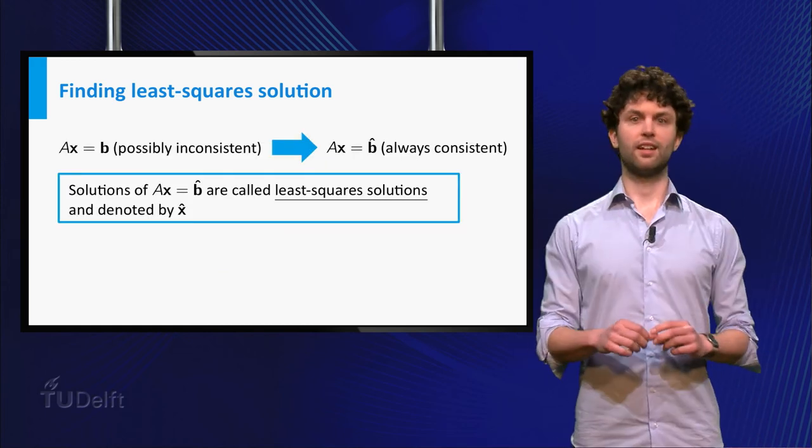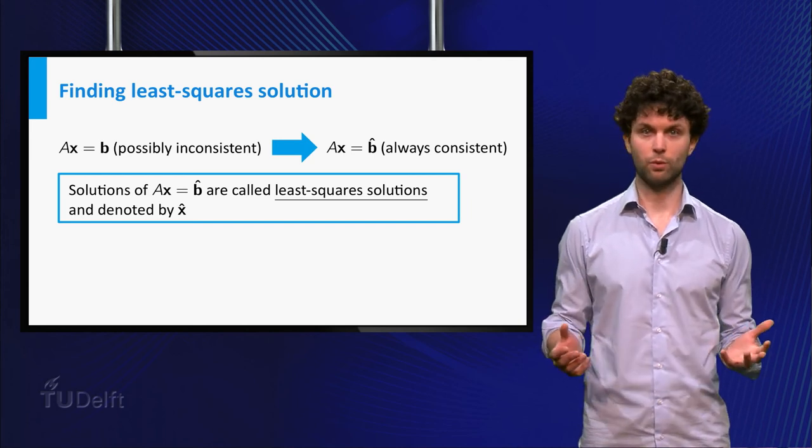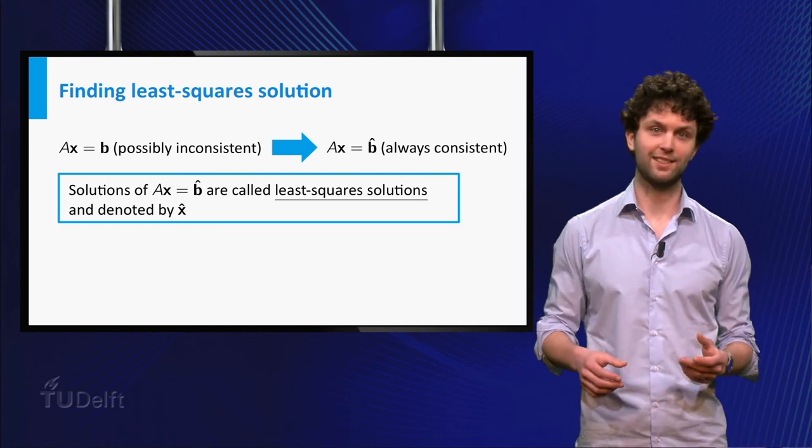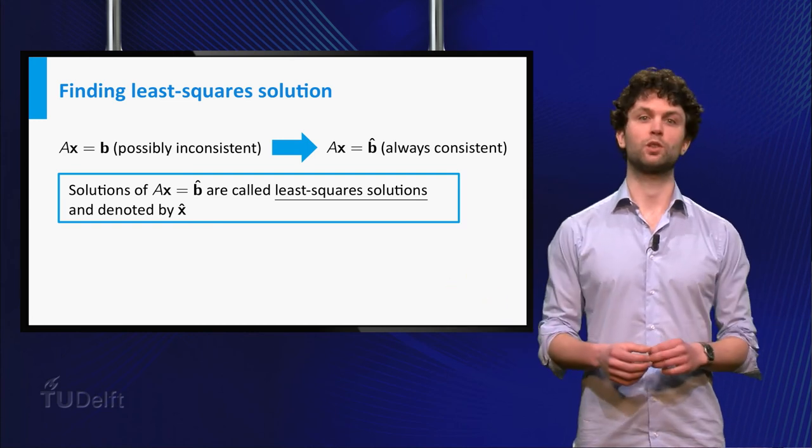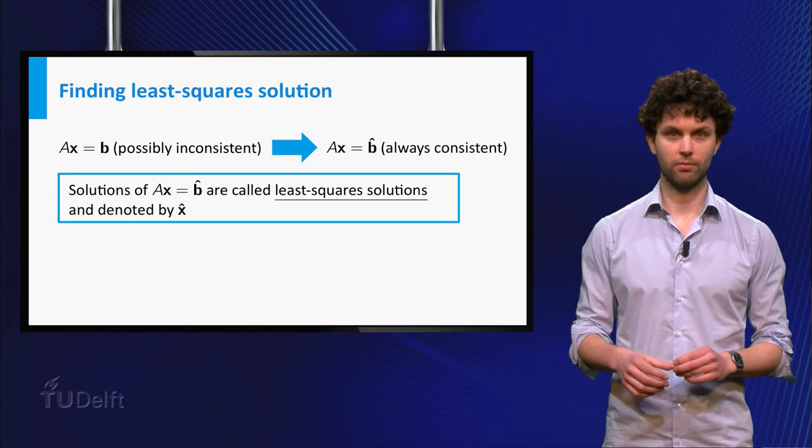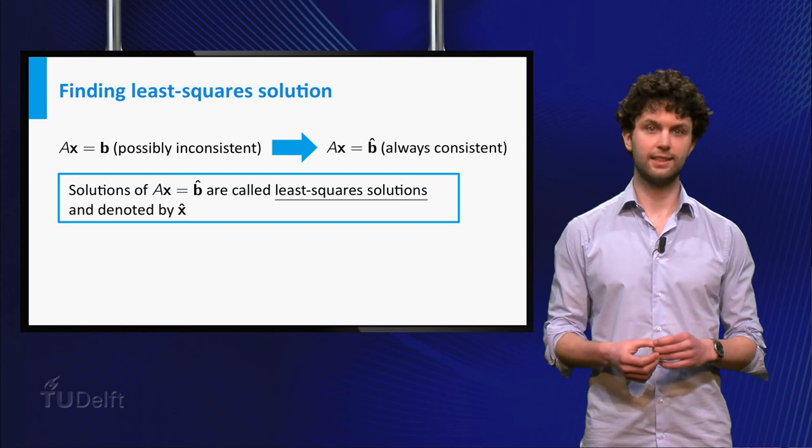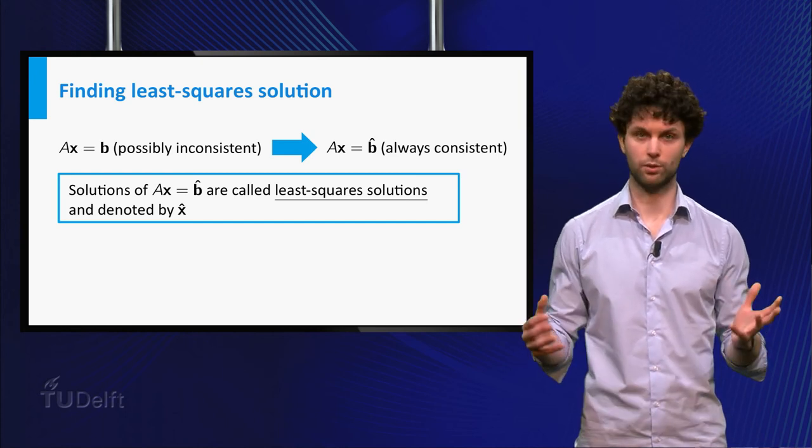So, the system A times x is equal to b, which might be inconsistent, is replaced by the system A times x is equal to b-hat, which is always consistent. The solutions of the system are denoted by x-hat, and they are the so-called least-square solutions of the original system.